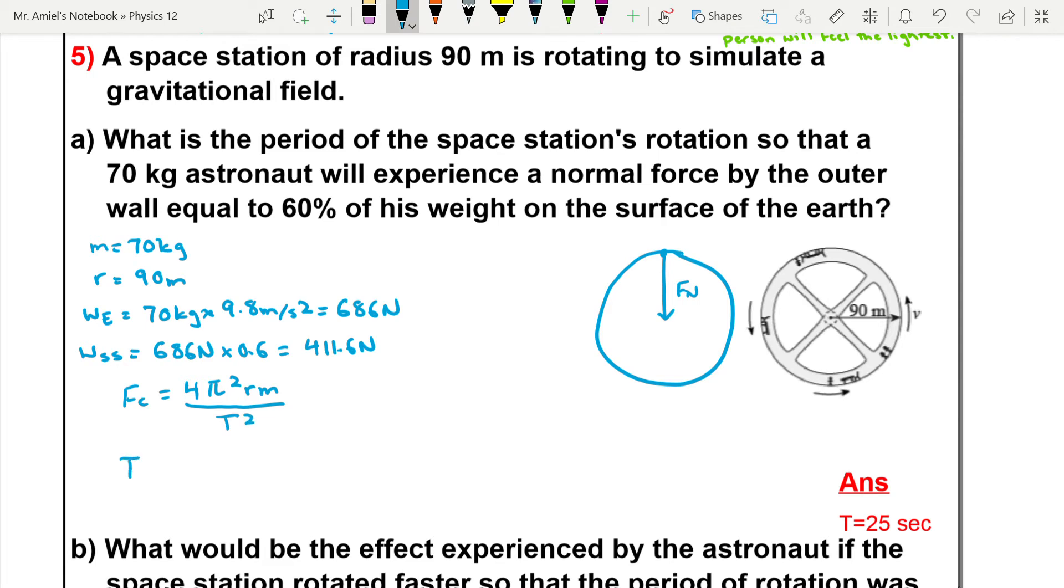So that the period, which is what we're after, is equal to the square root of 4π² r m divided by the centripetal force. Okay, so now we can actually just go ahead and plug in our values.